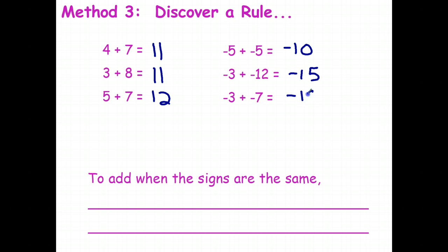And negative $3 plus negative $7 is negative $10. Now what you need to do is look at those — I'll stop the video shortly. Have a look and see if you can come up with a quick rule: what do you do when you're adding two numbers where the signs are the same, when they're both positive or both negative? Stop it and have a think.